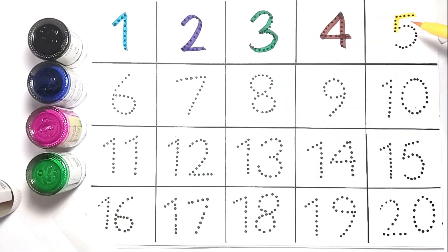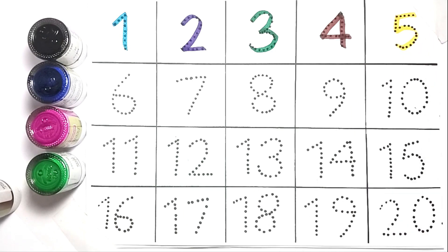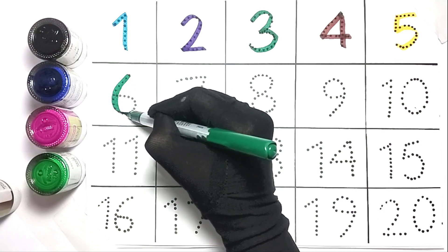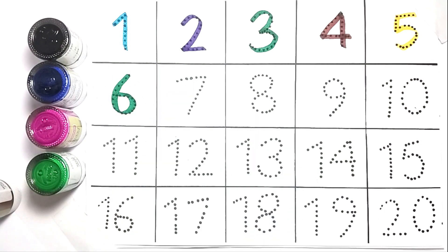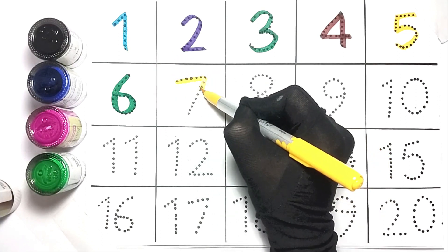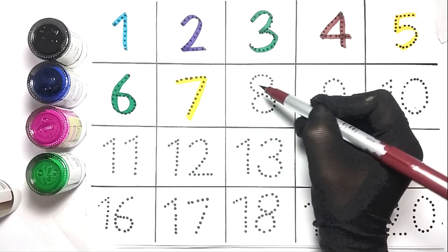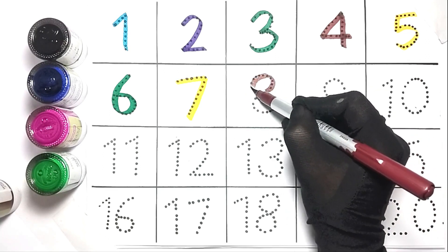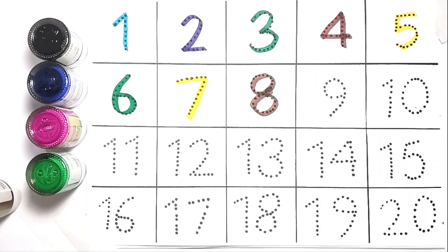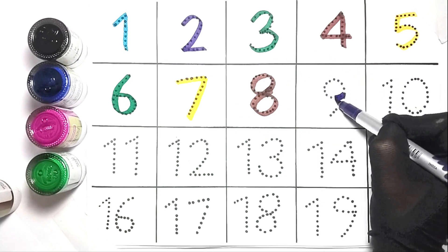Green color. 6, this is yellow color. 7, this is brown color. 8, this is yellow color. Purple color. 9, this is yellow color.